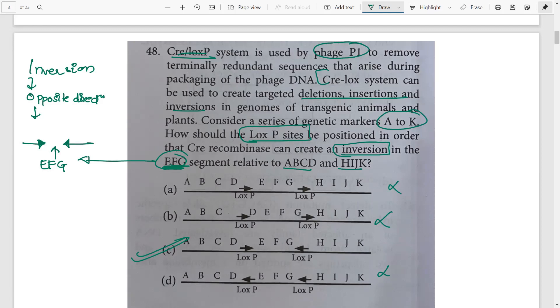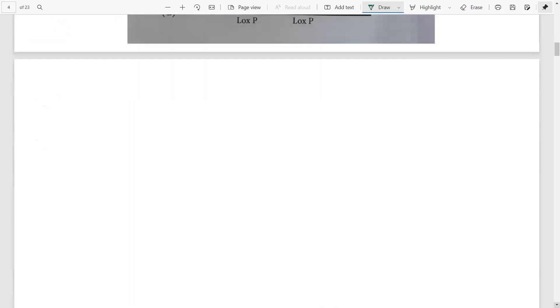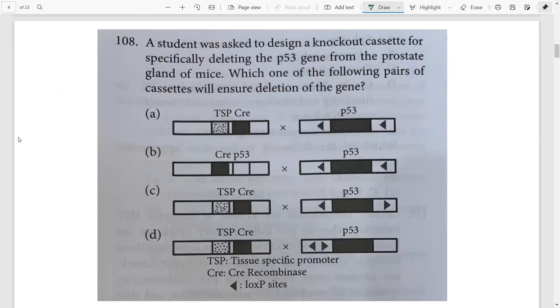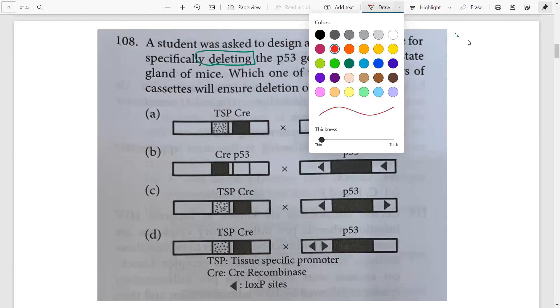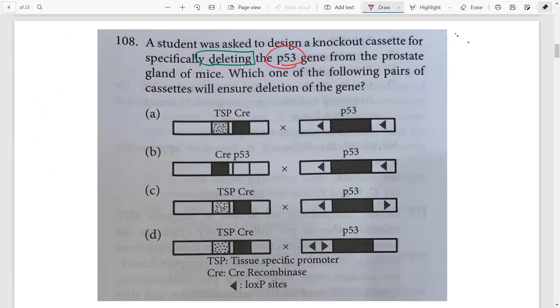Let's move on to the other question asked in CSIR NET. A student was asked to design a knockout cassette specifically deleting the p53 gene from the prostate gland of mice. Which of the following cassettes will ensure deletion?